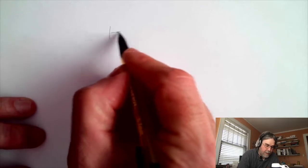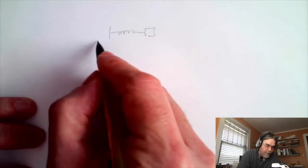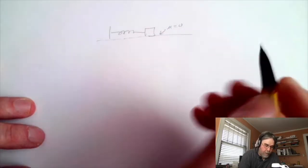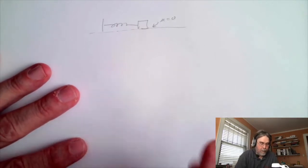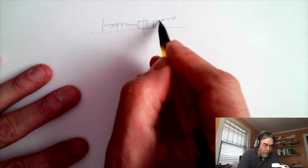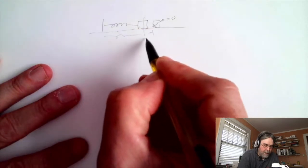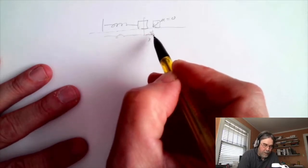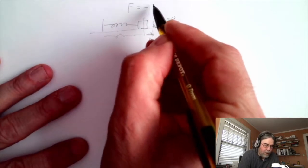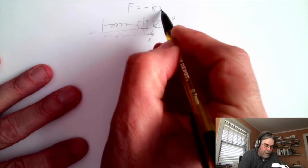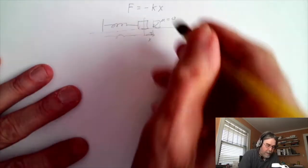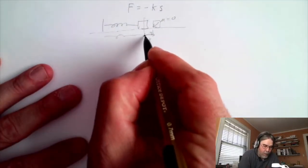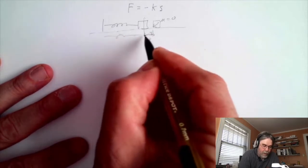If you've got a mass connected to a spring on a frictionless horizontal surface — so mu equals zero — and the mass is displaced a little bit from equilibrium, some distance X from equilibrium, it's going to stretch the spring. The force on a stretched spring is minus the spring constant times the displacement. In Physics 153 we probably called that S, the stretch, but I'm going to call it X and measure it relative to the equilibrium position.